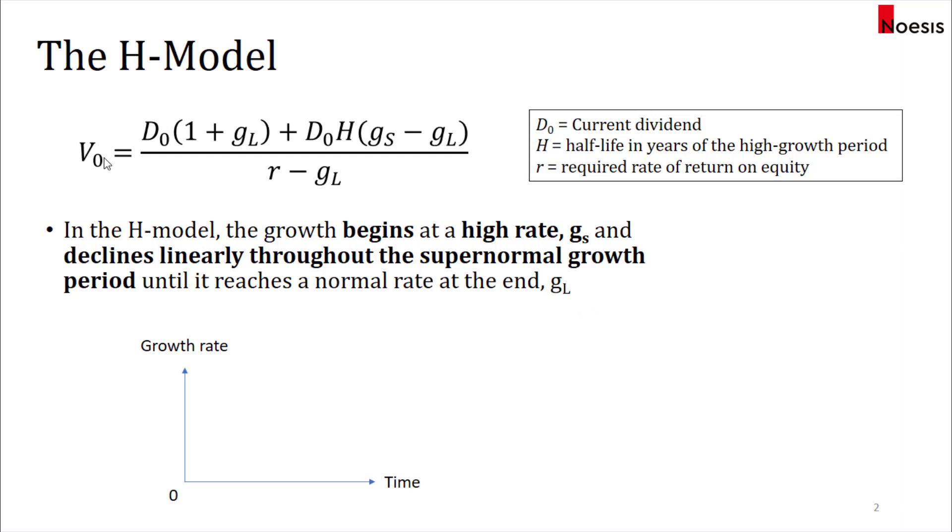The formula for the value per share today is denoted as the current dividend, D sub 0, times 1 plus the long-term growth rate, plus the current dividend times the half-life, which is H, and multiplied by the difference between the two growth rates, and we divide by the required return on equity minus the long-term growth rate.